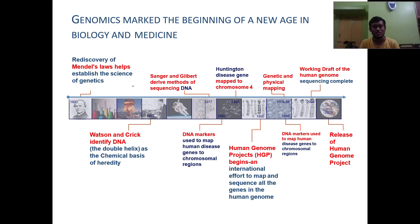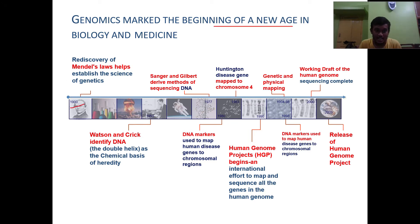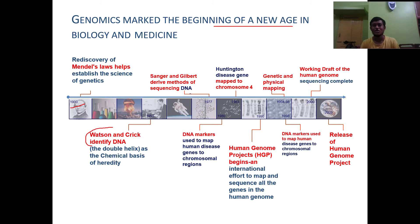Before moving to the details, let's go through a brief history of genomics, which marked the beginning of a new age in biology and medicine. It all started with Mendel, who discovered the science of genetics and is known as the father of genetics, in the 1900s. Then Watson and Crick developed the double-stranded helical structure of DNA. Then Sanger and Gilbert derived methods of DNA sequencing, which is a very important method.